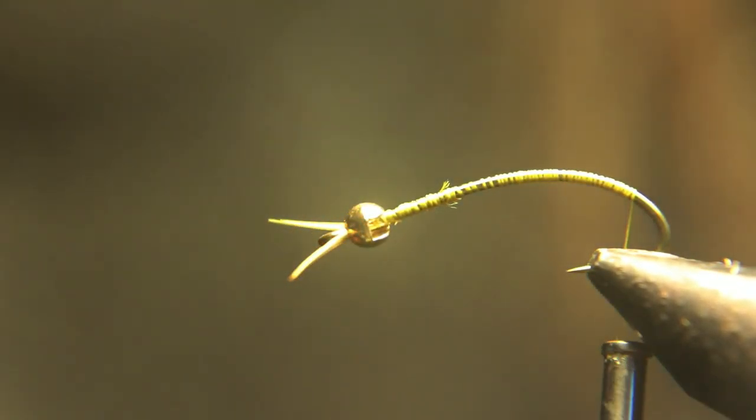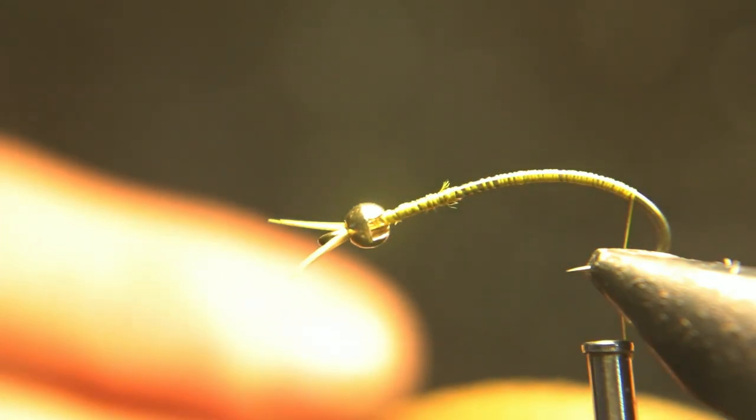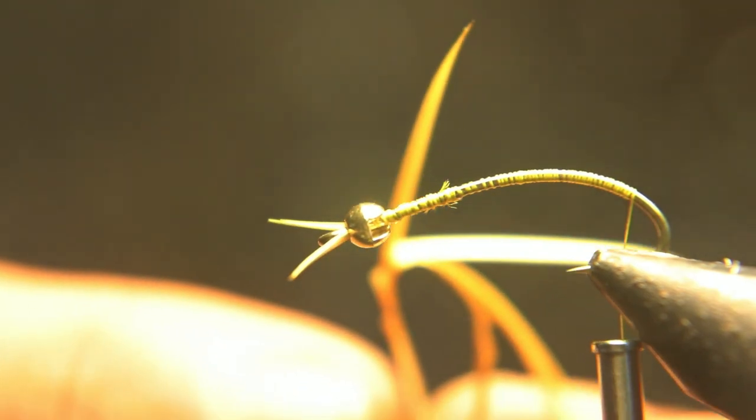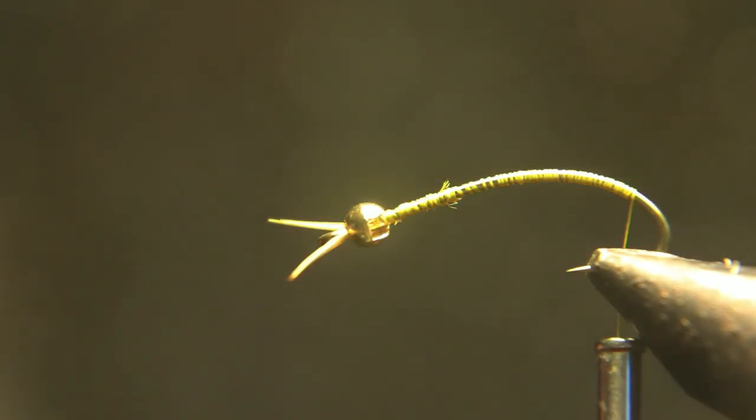You can see these goose biots are longer down at the base at the bottom of the feather and really small at the top. I'm going to use the top ones to tie your antenna and your tails out of the bottom, the longer thicker ones.